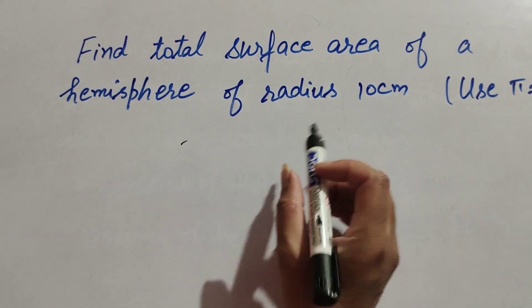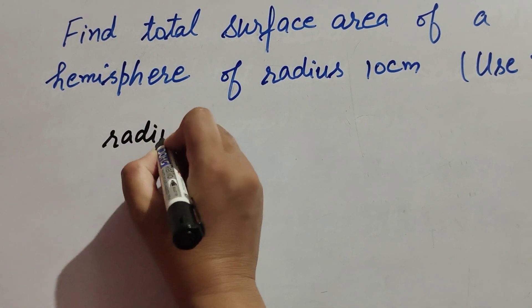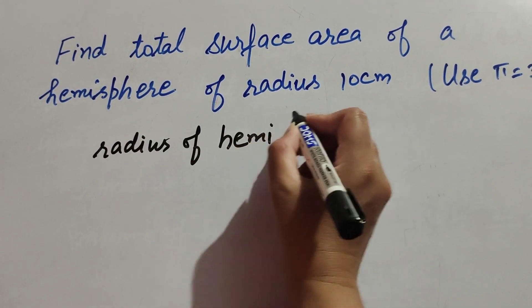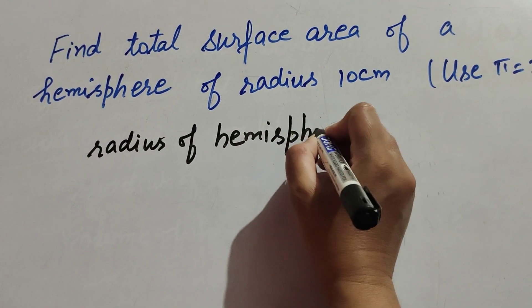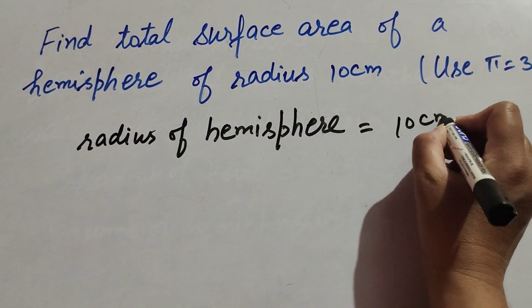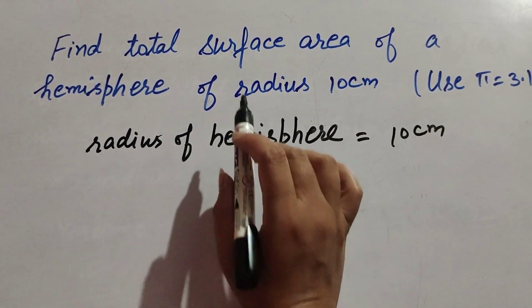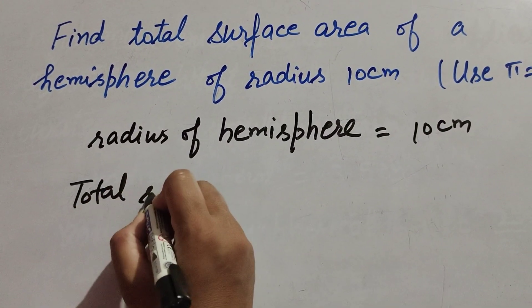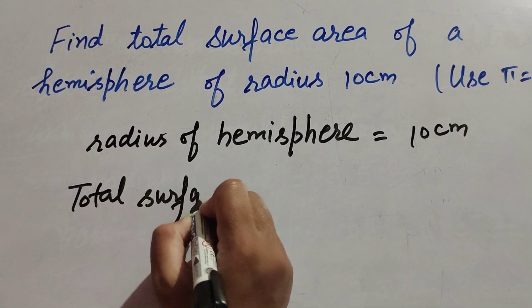In this question we find the total surface area of hemisphere and its radius is given 10 centimeter. So radius of hemisphere is equal to 10 centimeter and we find total surface area of hemisphere.